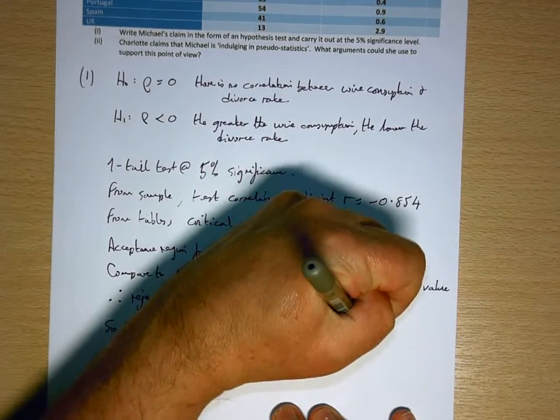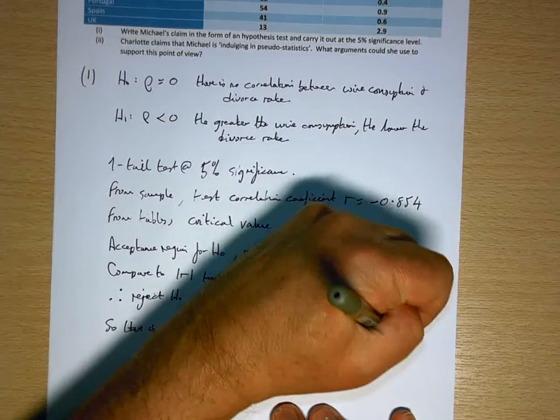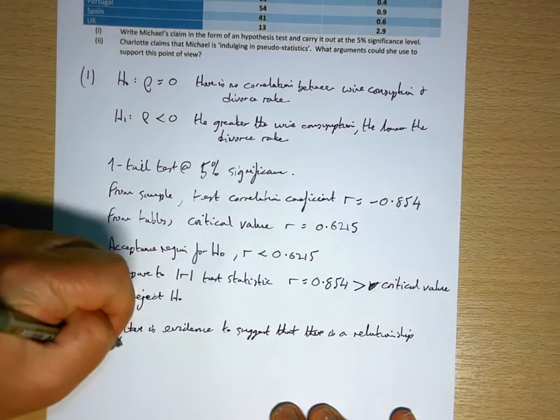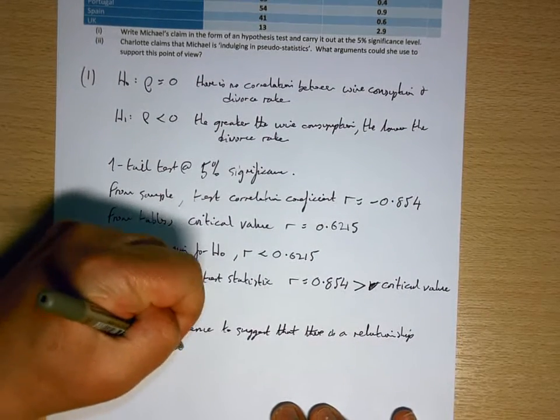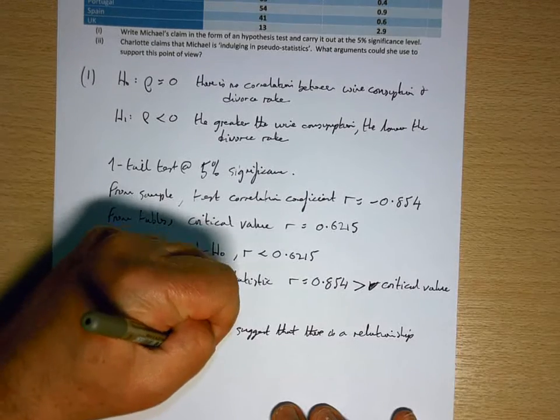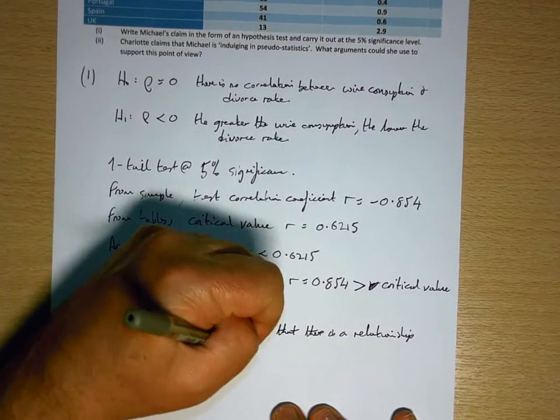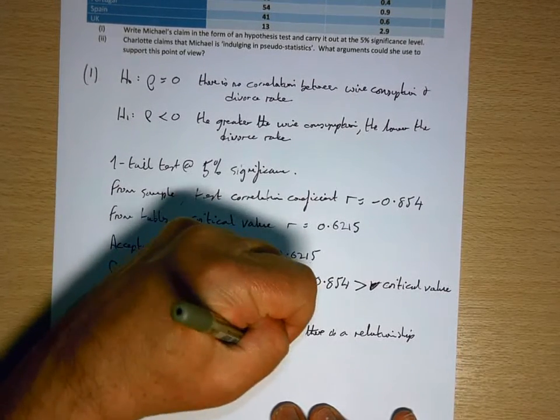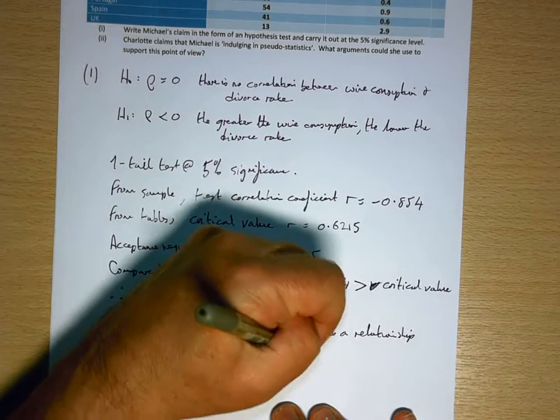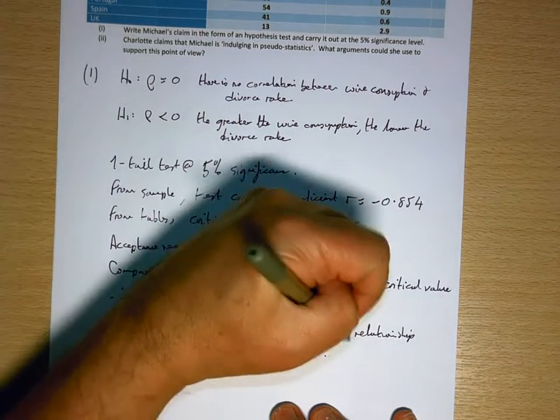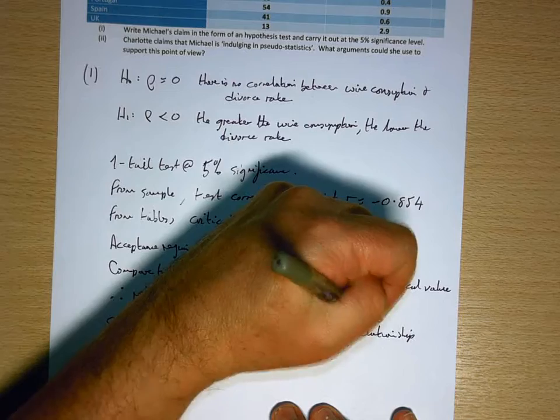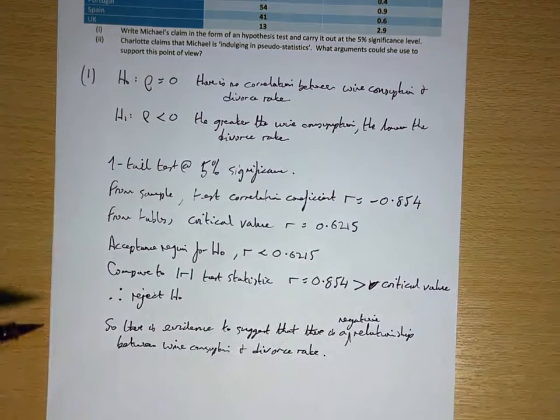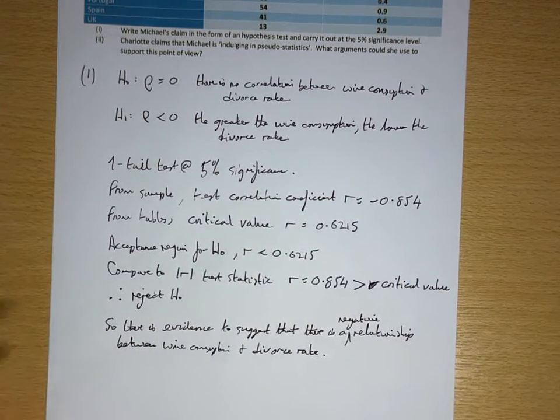a relationship between wine consumption and divorce rate. More than a relationship, there is a negative relationship. As one increases, the other decreases, according to the data he provided.